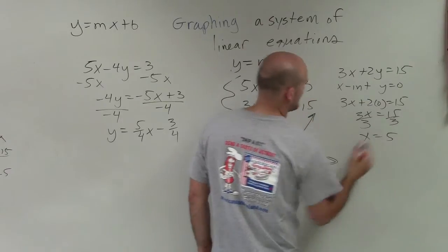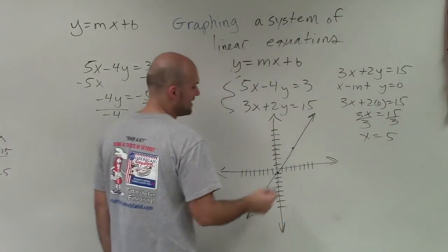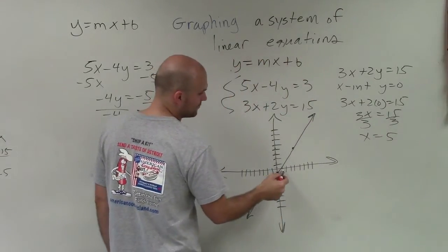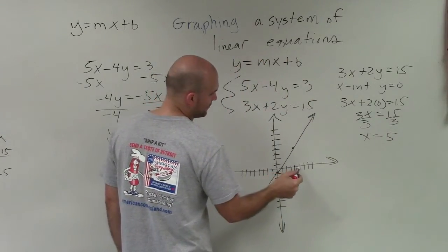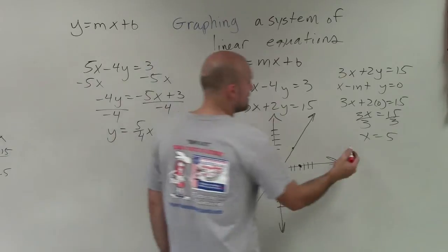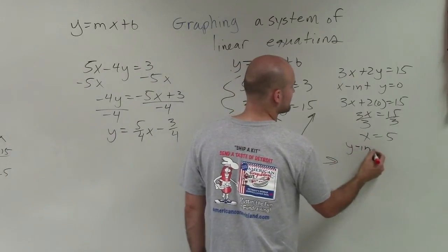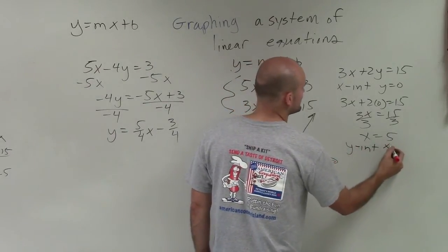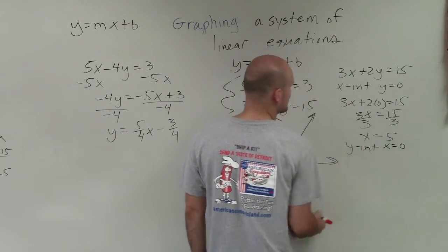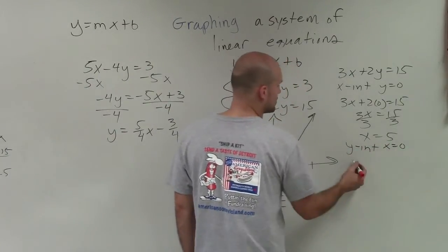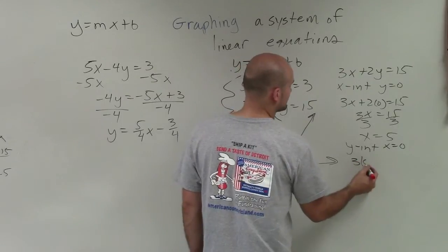So x equals 5 for the x-intercept. I go over to 5: 1, 2, 3, 4, 5, and make a nice big dot. Then I find the y-intercept, which is when x equals 0, so I put 0 in for x.